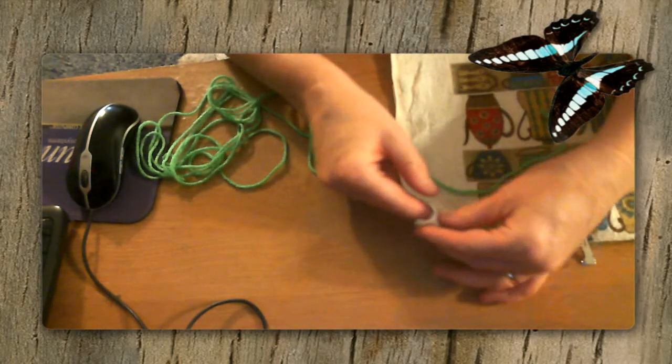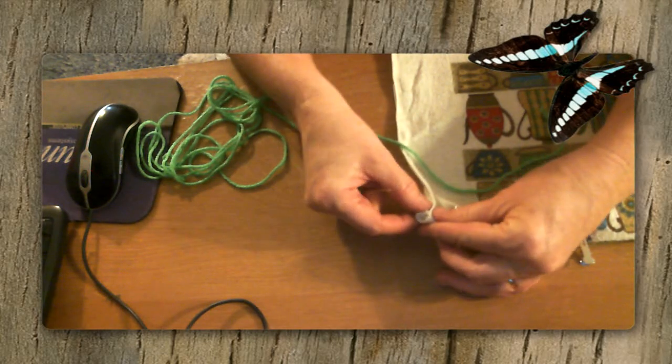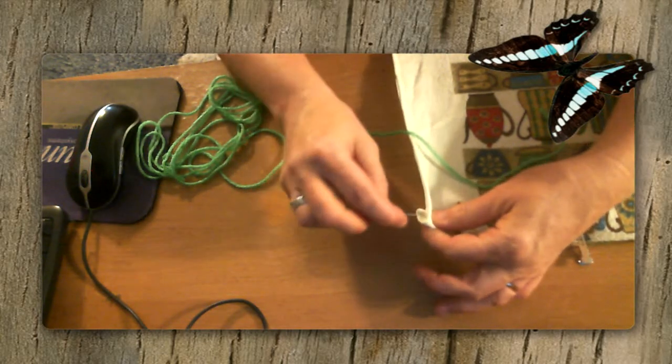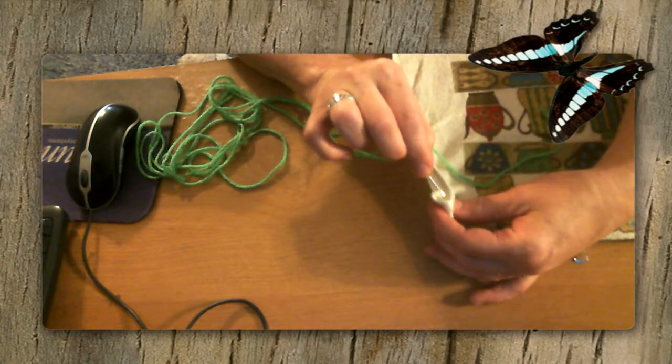What the pattern said that I was starting with was it said to, after you cut your towel, to hem it. Well, I don't have a working sewing machine, so I thought, what am I gonna do? So I decided just to hem it with yarn.